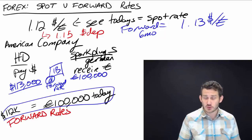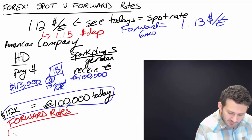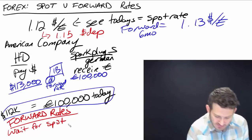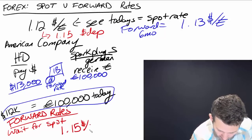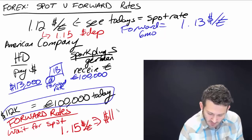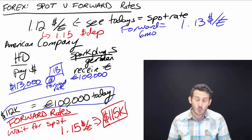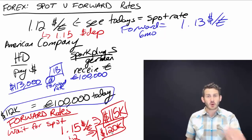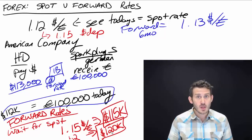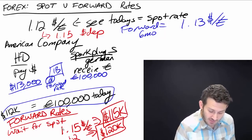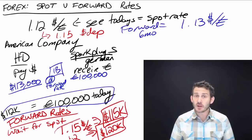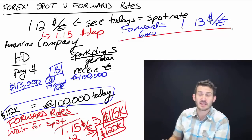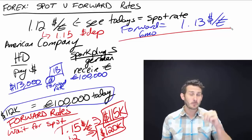Why use the forward rate? Because if we wait to see what the spot rate is, what happens if it changes to say 1.15 dollars per euro? My actual cost would be 115,000 dollars. What if it goes up to 1.20? My cost would be 120,000 dollars. Regardless of what those market prices are in six months, I'm going to pay 113,000 dollars because I entered into that forward rate contract at $1.13 per euro.